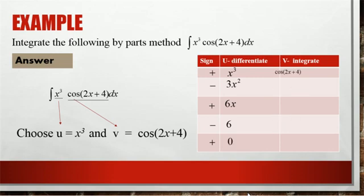And the third column we can take the v, cos 2x plus 4. Now we start integrating. The second column is differentiation, third column integration. Cos 2x plus 4 integration is sin 2x plus 4 divide 2.